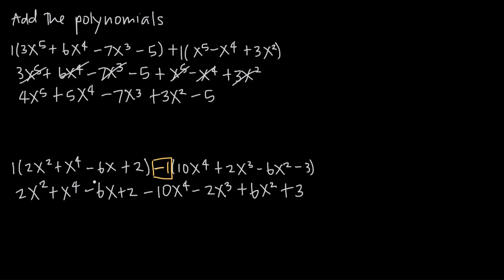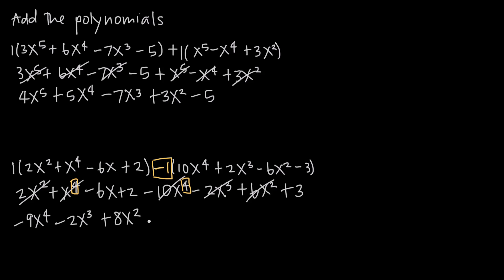With everything outside of our parentheses, we can start adding like terms. We want to order our terms in descending degrees, so we start with the highest degree term. We have x to the fourth and negative 10x to the fourth — that gives us negative 9x to the fourth. I like to cross mine out as I go to make sure I get all my terms. Next are x cubed terms: we have negative 2x cubed. Then x squared terms: positive 2x squared plus positive 6x squared gives us positive 8x squared. Then we have negative 6x, and finally positive 2 plus 3 gives us positive 5.